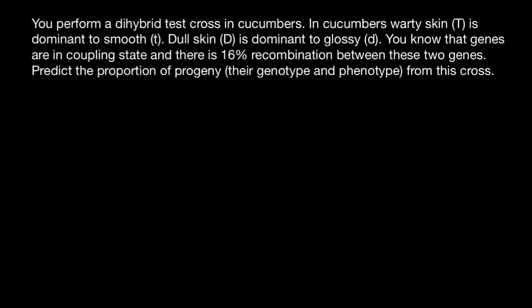Hello and welcome to Nikolai's Genetics Lessons. This problem I got from one of my subscribers. You perform a dihybrid test cross in cucumbers. In cucumbers, warty skin is dominant to smooth, and dull skin is dominant to glossy. You know that genes are in coupling state and there is 16% recombination between these two genes. Predict the proportion of the progeny, the genotype and phenotype, from this test cross.